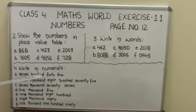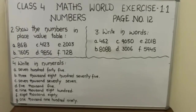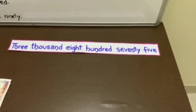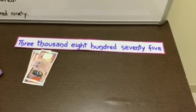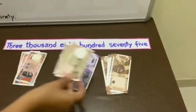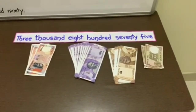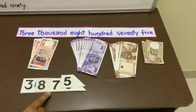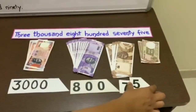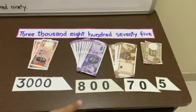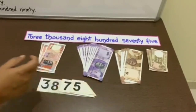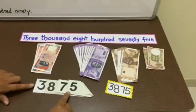Next question: write in numerals. We will solve part B. The number is 3,875. First of all, we will take the currency notes — 3,875. Now we will see this figure on one card — 3,875. If we expand it, it is 3,875. Now we join it again — 3,875. So it will be written in numerals as 3,875.